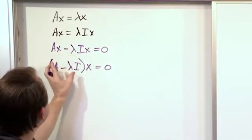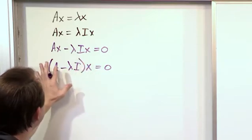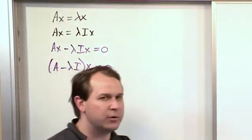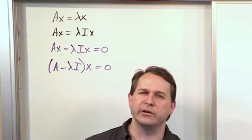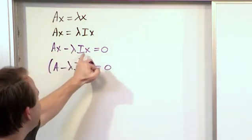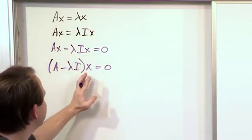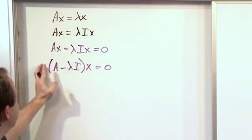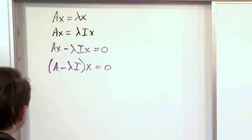When you factor out the x, you need to make sure and pull it out on the right because don't forget these are matrix multiplications. So when you do matrix multiplications in reverse, you can't just reverse the order of it. So since it's Ax and lambda Ix, we need to keep the x in the same relative position. So we pull it out to the right. You wouldn't want to pull it out to the left like this.